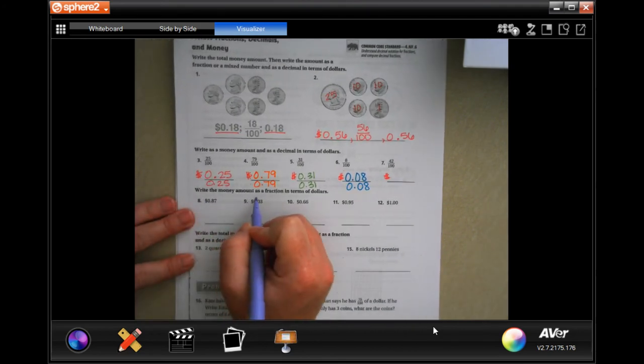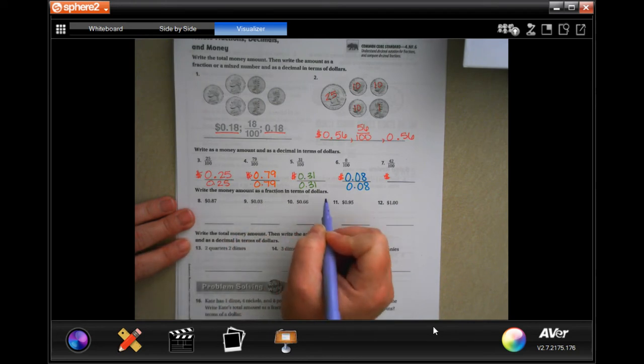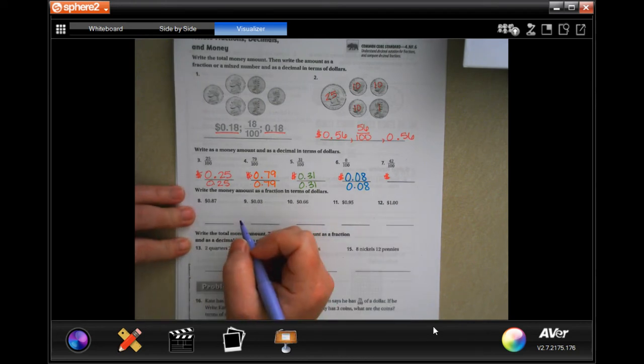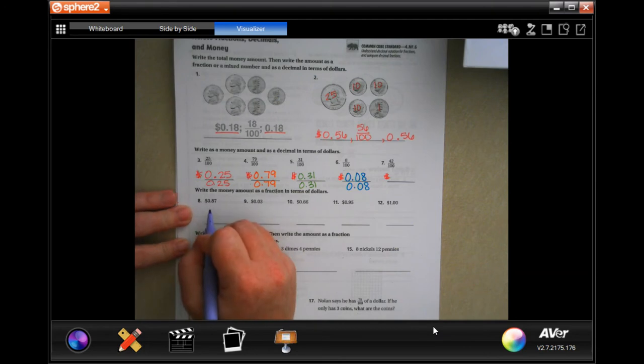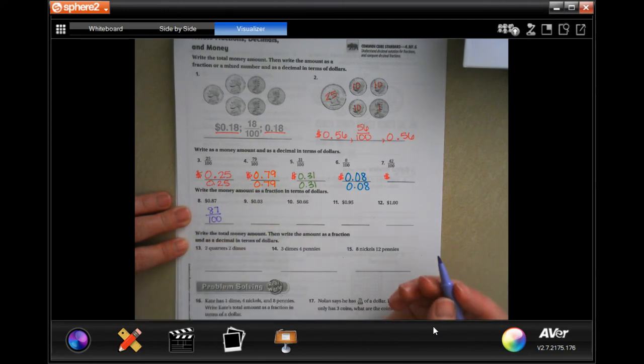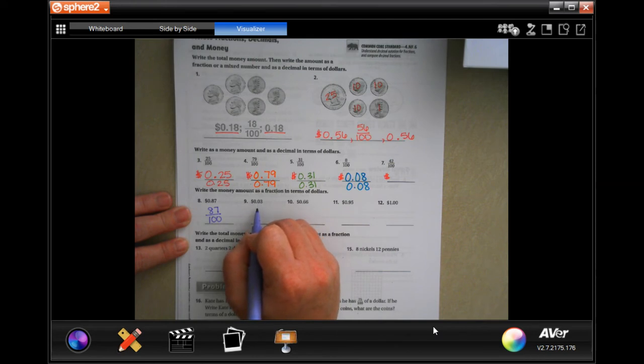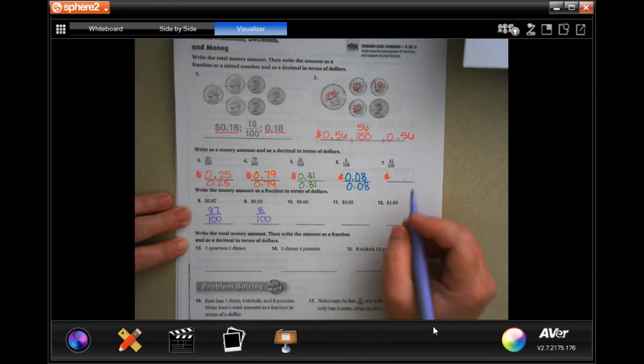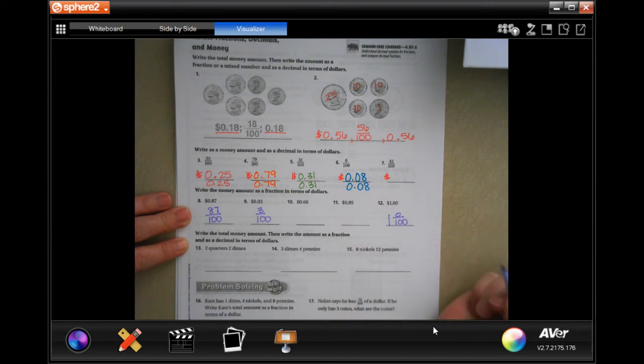Write the money as an amount of a fraction in terms of dollars. So, now we're just going to swap that. So, 87 cents and the sevens and the hundredths. So, 87 and the sevens and the hundredths. Three cents? Well, three is in the hundredth spot. So, three over a hundredth. They're trying to trick you on this one. Boom.